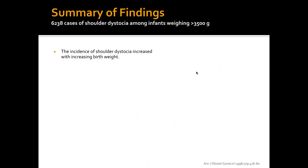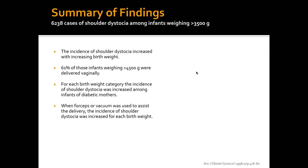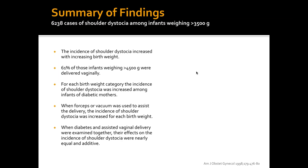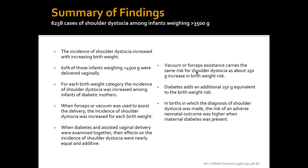Key conclusions from the study: the incidence of shoulder dystocia increased with increasing birth weight. 61% of infants weighing 4,500 grams or greater were delivered vaginally. For each birth weight category, incidence was increased among infants of diabetic mothers. When forceps or vacuum was used, incidence was increased for each birth weight. Diabetes and assisted vaginal delivery together had nearly additive effects. Vacuum or forceps assistance carries equivalent risk to about a 250-gram birth weight increase, and diabetes adds an additional 250-gram equivalent. The risk of brachial plexus injury was higher when maternal diabetes was present.